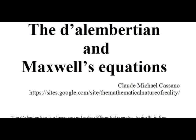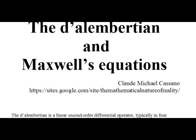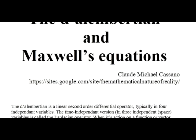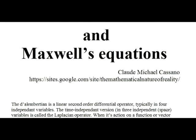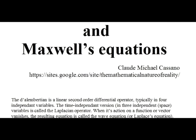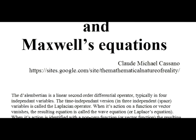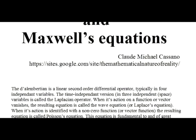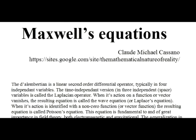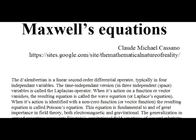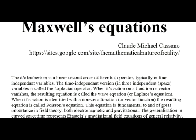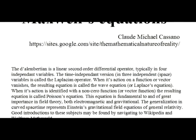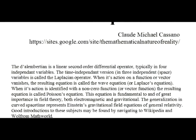The D'Alembertian is a linear second-order differential operator, typically in four independent variables. The time-independent version in three independent space variables is called the Laplacian operator. When its action on a function or vector vanishes, the resulting equation is called the wave equation or Laplace's equation. When its action is identified with a non-zero function or vector function, the resulting equation is called Poisson's equation.